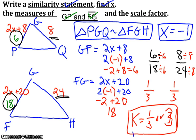So I think we've taken care of everything. We've written a similarity statement, we found X, we found the lengths of GP and FG, and we found our scale factor. Good luck doing problems like these on your own. Remember, consult your notes. Hopefully you took good notes, neat notes, that you could refer back to and understand what you did. If you have any questions, see your teacher tomorrow.